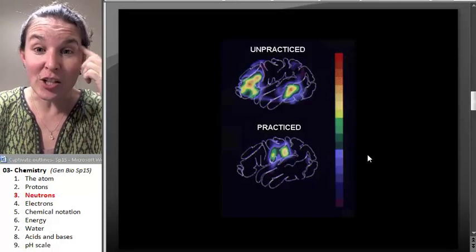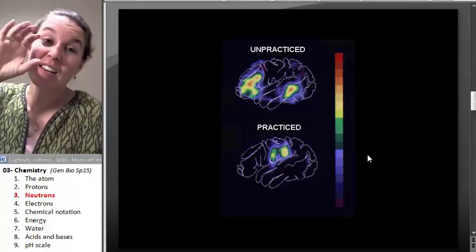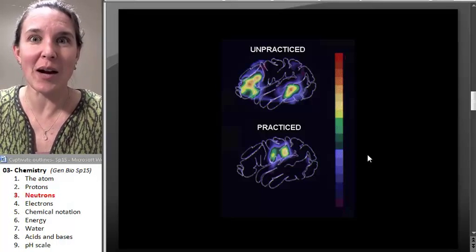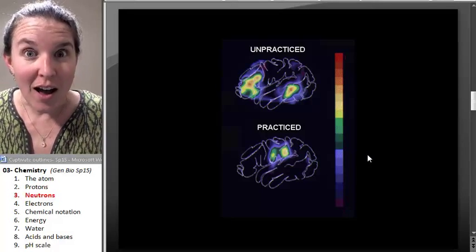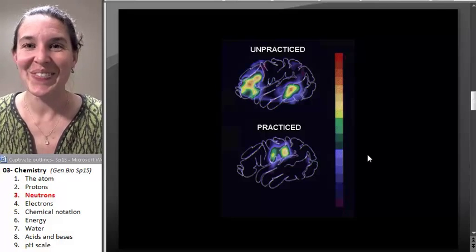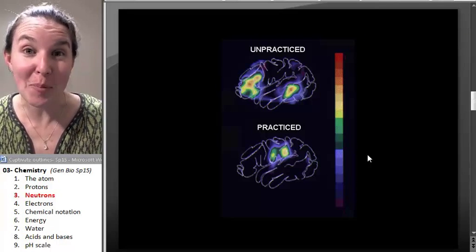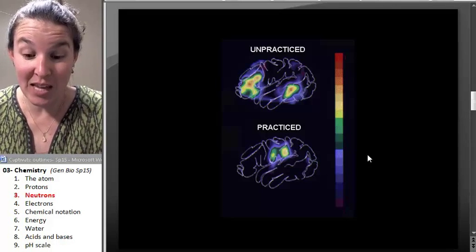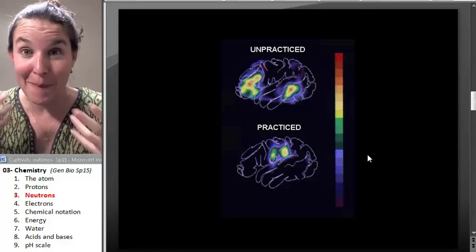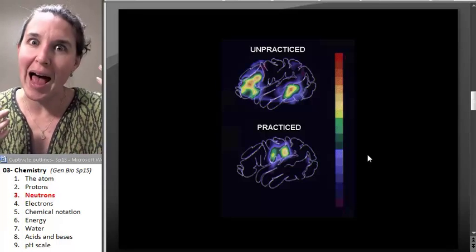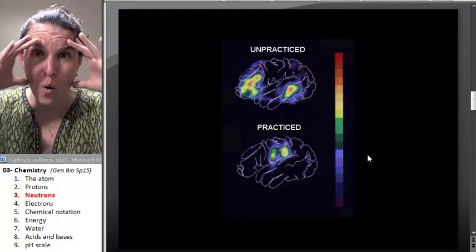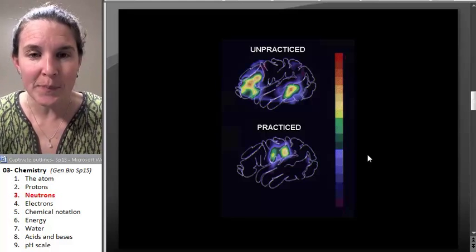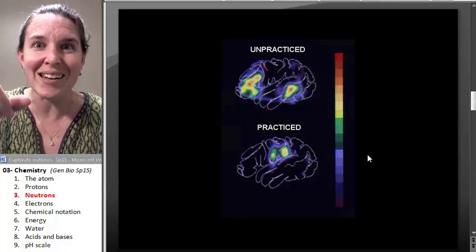And you can actually do things like give somebody a cup full of radioactive glucose water, and they drink it, and then all their body parts that use a lot of glucose, that metabolize glucose like mad, like active brain parts or horribly cancer tumors,